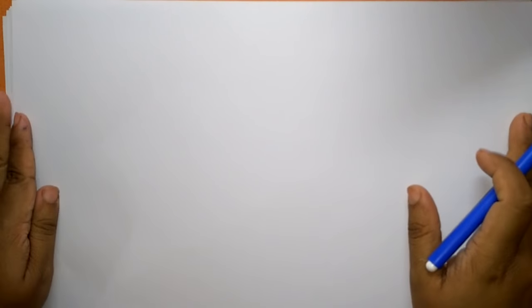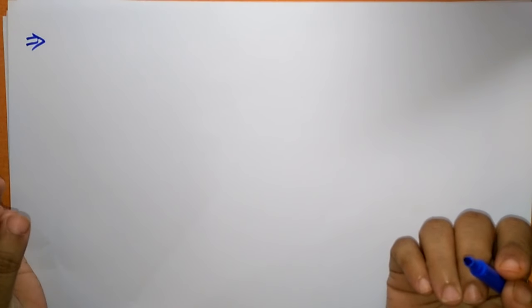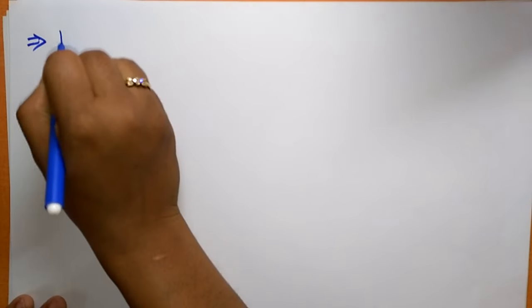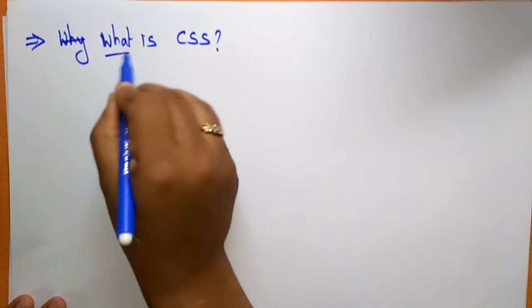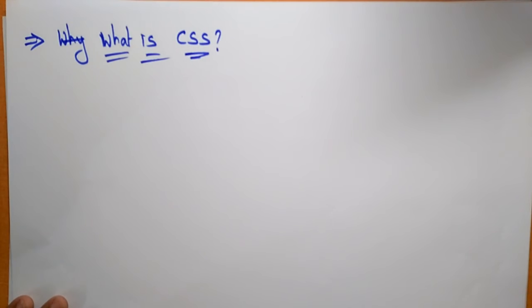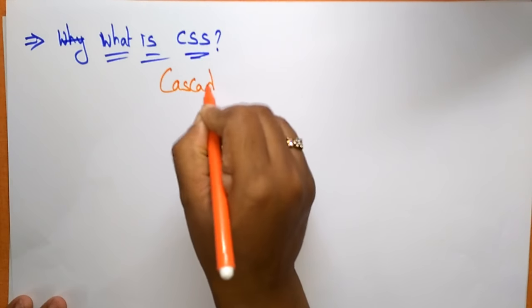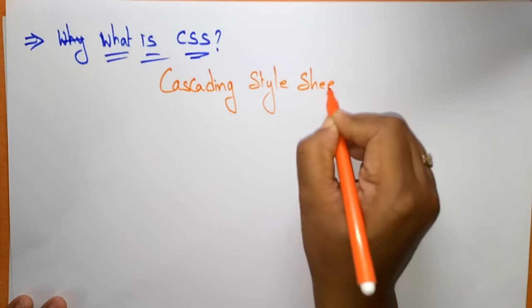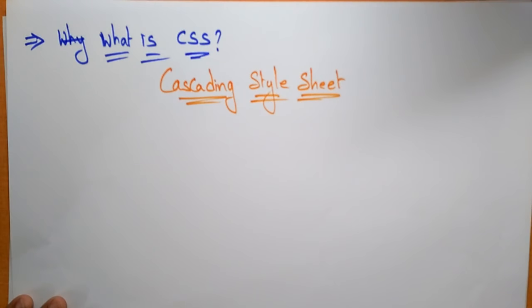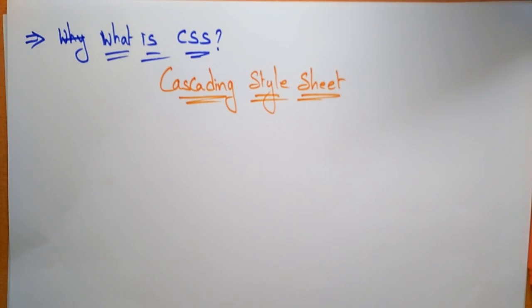Coming to the next topic, that is CSS — Cascading Style Sheets. In this video, I'm going to explain what exactly Cascading Style Sheets are and why we use them. CSS stands for C for Cascading, S for Style, and S for Sheet — CSS means Cascading Style Sheet.